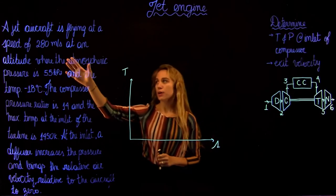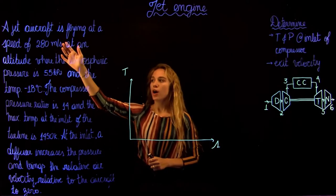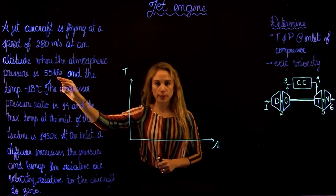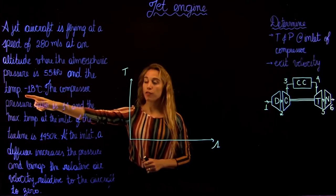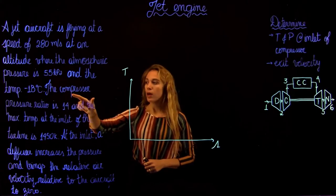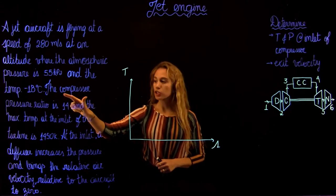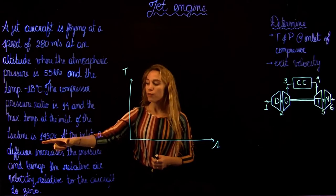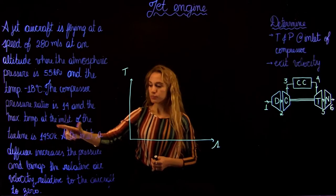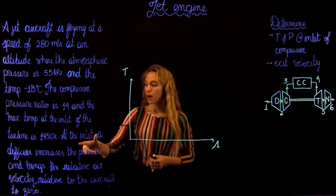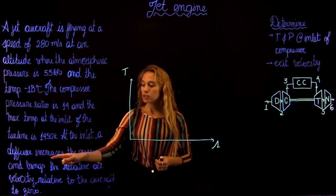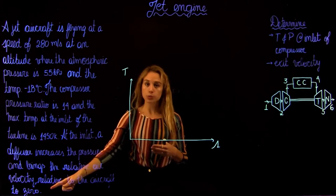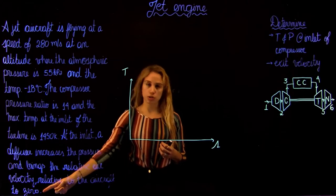We have a jet aircraft flying at 280 meters per second at an altitude where the atmospheric pressure is 55 kilopascals and a temperature of minus 18 degrees Celsius. At the inlet of the jet engine, a diffuser increases the pressure and brings the relative air velocity, which is relative to the aircraft, to zero.